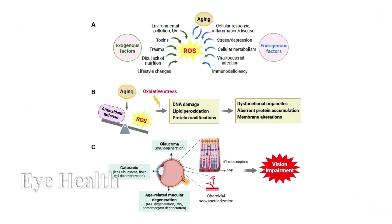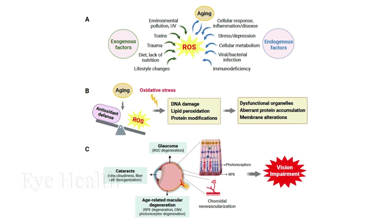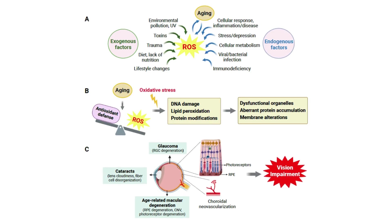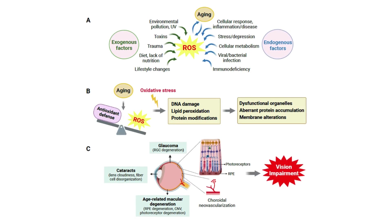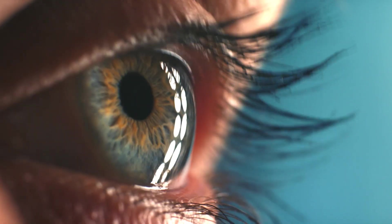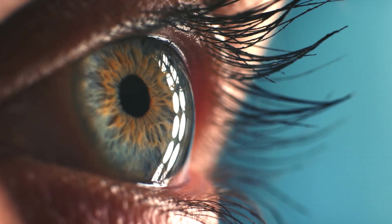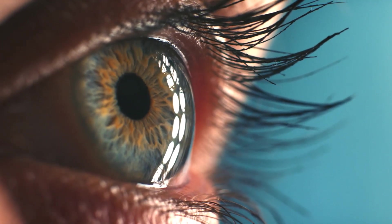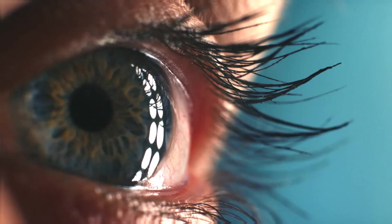Astaxanthin supports eye health by protecting against oxidative stress and inflammation, which can lead to eye diseases such as cataracts and age-related macular degeneration, or AMD. Its ability to cross the blood retinal barrier allows it to protect retinal cells directly, reducing oxidative damage and improving overall eye function.